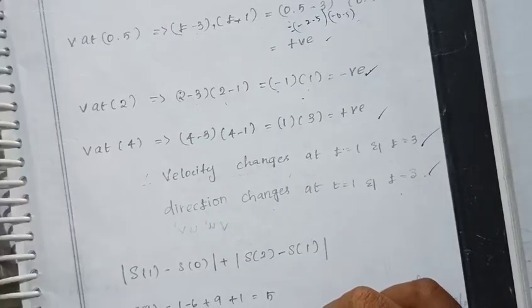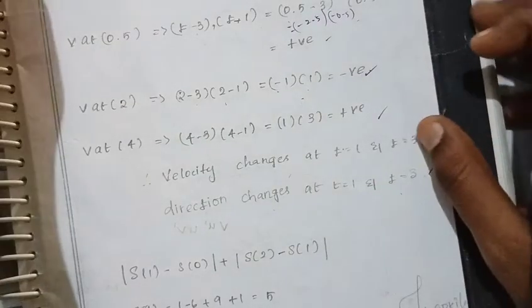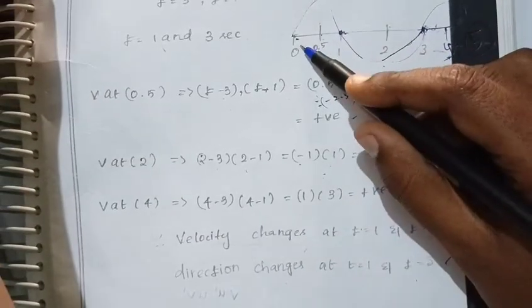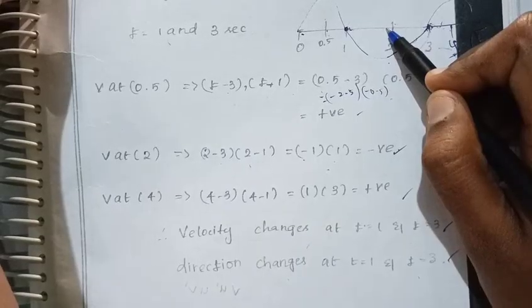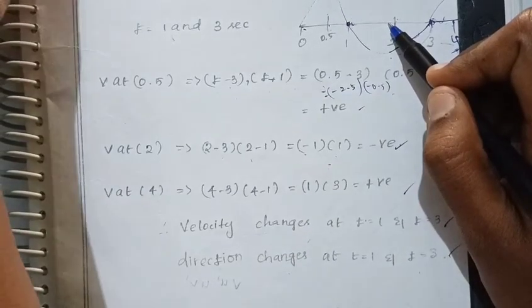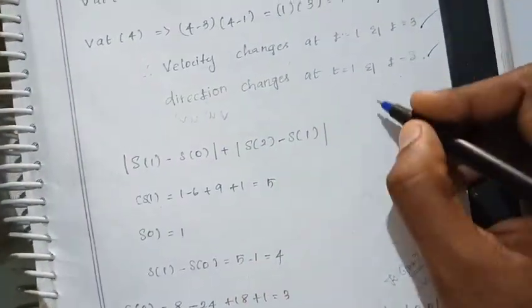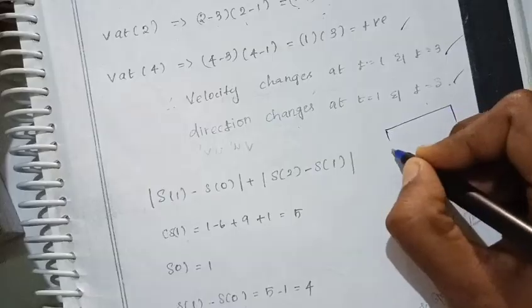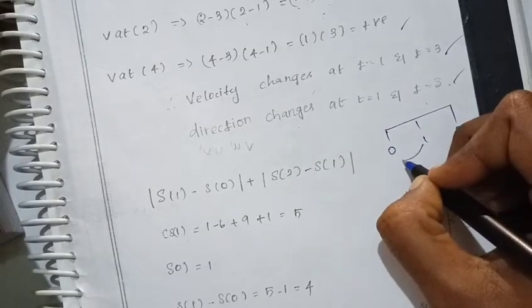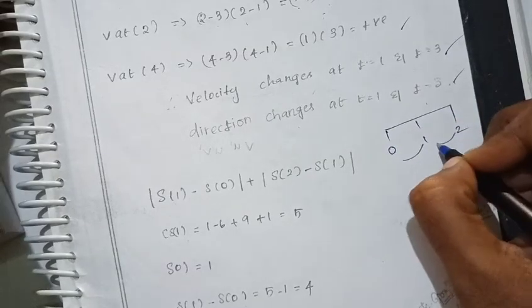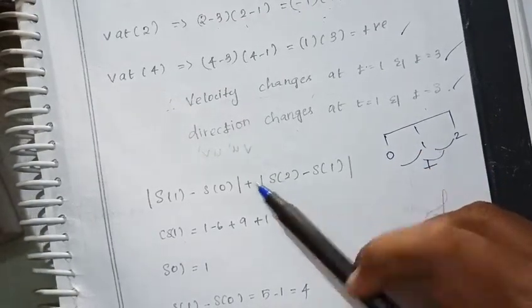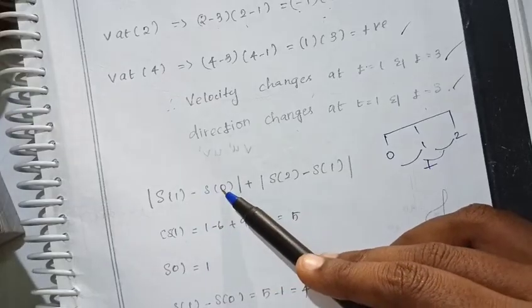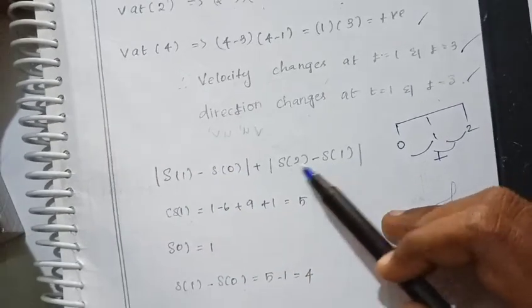Now we find the total distance traveled in the first 2 seconds. Since the particle changes direction at t = 1, we split into intervals 0 to 1 and 1 to 2. Total distance = |S(1) - S(0)| + |S(2) - S(1)|.